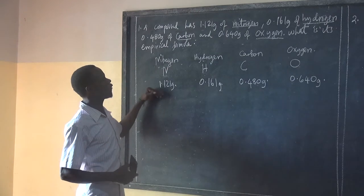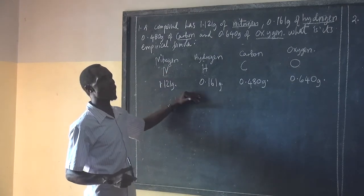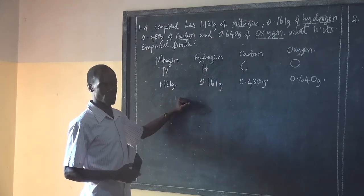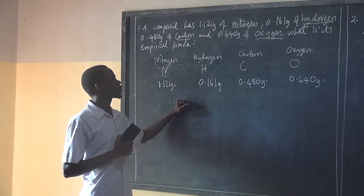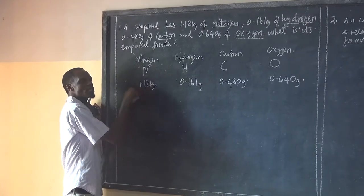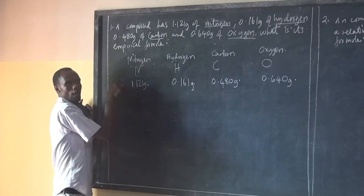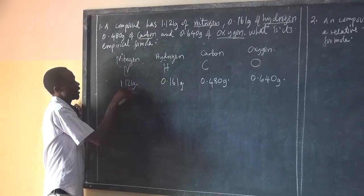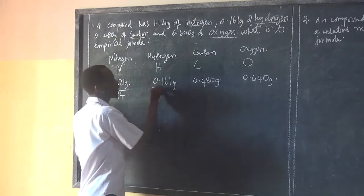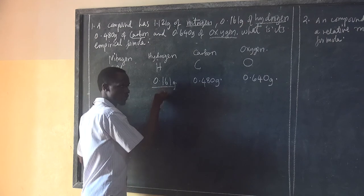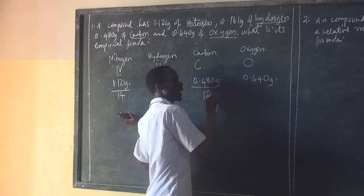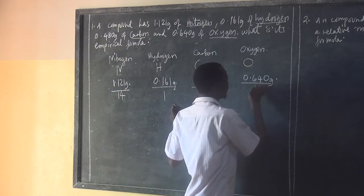The next step, after we have listed the masses or abundances of every element in the compound, is dividing every mass by its respective relative atomic mass. The relative atomic mass for nitrogen is 14. The relative atomic mass for hydrogen is 1. The relative atomic mass for carbon and the relative atomic mass for oxygen are to be determined.